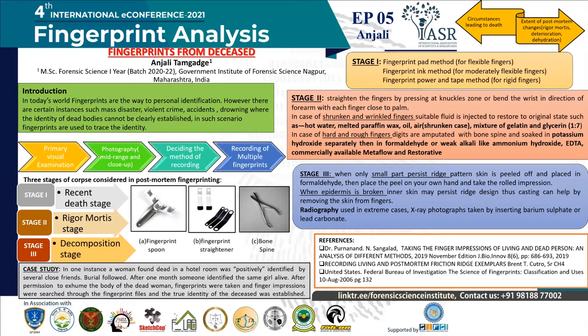Where the fingers are rigid, we can use the powder and tape method, same as used for the lifting method. Stage 2 is where rigor mortis has established — it is onset due to the fusion of myosin and actin filaments in the muscle that forms actomyosin, which makes the muscle stiff.